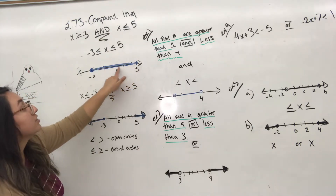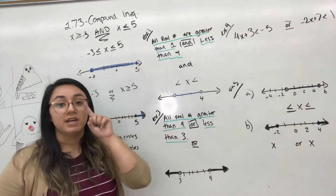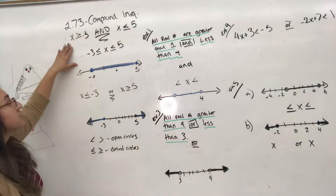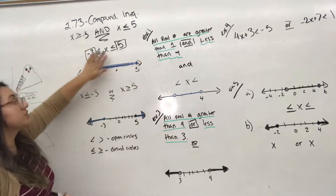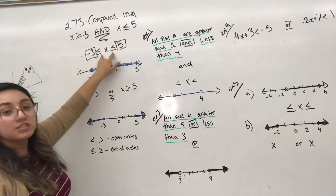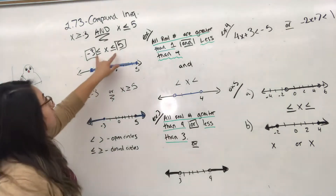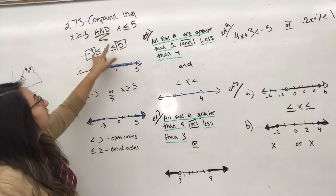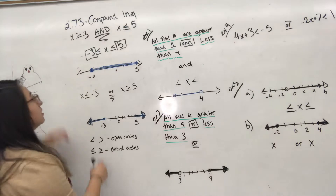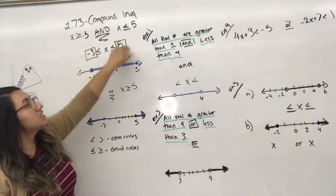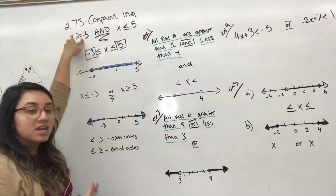Whenever you're dealing with inequalities, x is not one answer anymore — x is a range of different answers. To graph an AND inequality, you fill in the lowest point (minimum) and the highest point (maximum). Here, the minimum point is negative three and the maximum point is five, because x is between negative three and five.